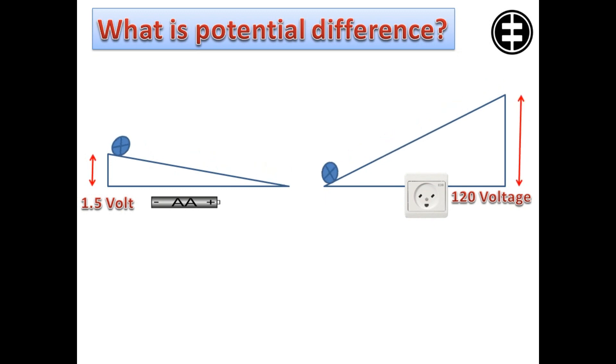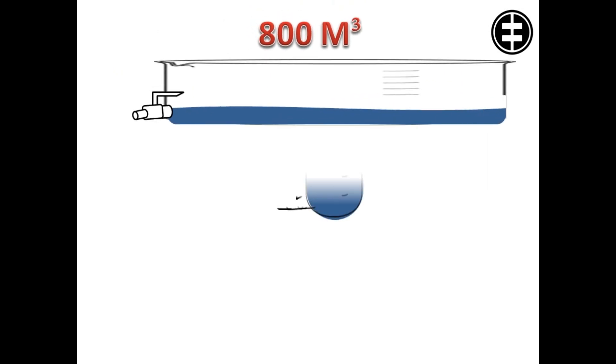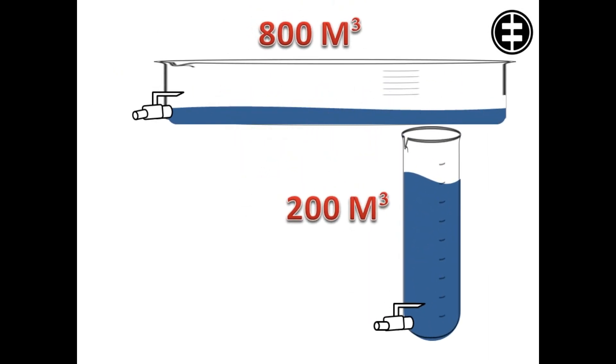Voltage, potential difference can be compared to water stored in a tank. The larger the tank and the greater its height, and thus its potential velocity, the greater the water's capacity to create an impact when a valve is opened and the water, like electrons, can flow.